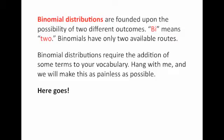Binomial distributions are founded upon the possibility of two possible outcomes. Let's go back to your childhood and think about the word 'bi.' Do you remember the word bicycle? A bicycle had two tires; a tricycle had three. If we were talking about a trinomial distribution, we would be talking about something with three possibilities, but binomial means that we have two possibilities.